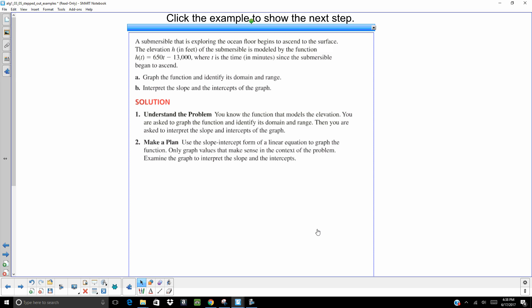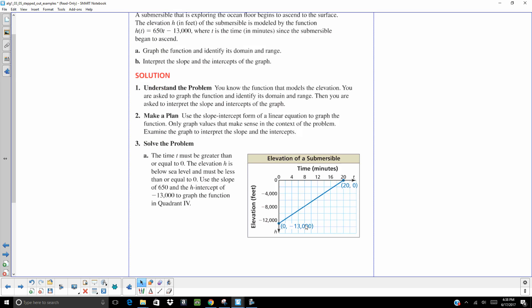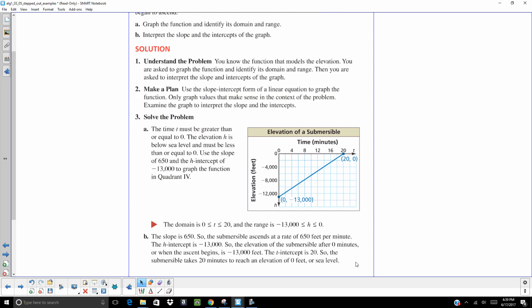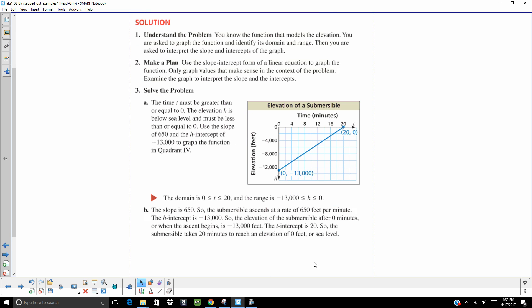So, our plan is going to be to graph. Let's go ahead and do it. So, when we graph it, it's going to look something like this. Our y-intercept is negative 13,000. It's going up 650 and then right 1. This is what the graph should look like. So, the domain is happening from 0 to 20 because we can't have a negative time. And the range is going to be from negative 13,000 to 0 because it's a submarine. It can't be above. So, the top value is going to be 0. Its lowest value is negative 13,000. And it takes 20 minutes to reach an elevation of 0 feet or sea level.